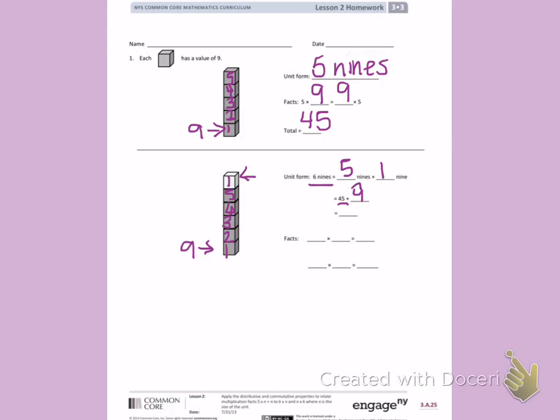I'm using my fingers and counting up: 45, 46, 47, 48, 49, 50, 51, 52, 53, 54. That gives me a total of 54.